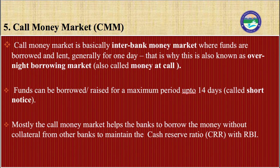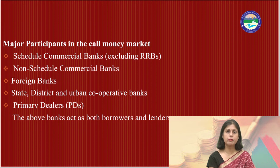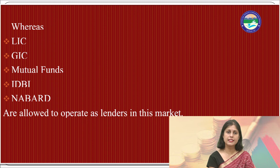Banks also borrow from other banks to meet demand for large payments and large remittances. Eligible participants are free to decide on interest rates in the call and notice money market. Major participants include scheduled commercial banks (excluding regional rural banks), non-scheduled commercial banks, foreign banks, state, district, and urban cooperative banks, and primary dealers — all of which act as both borrowers and lenders.